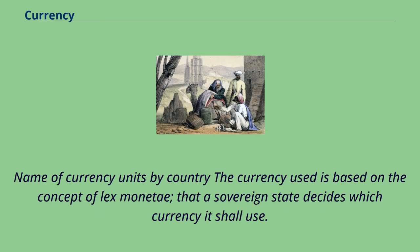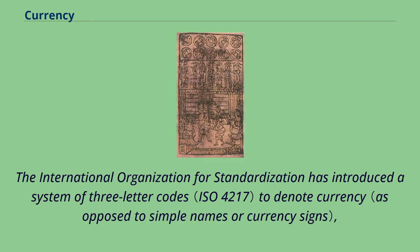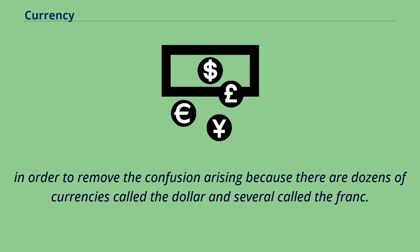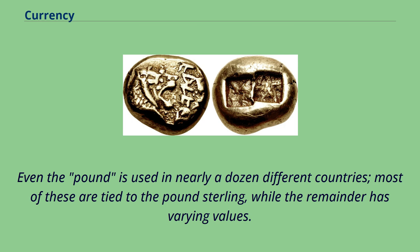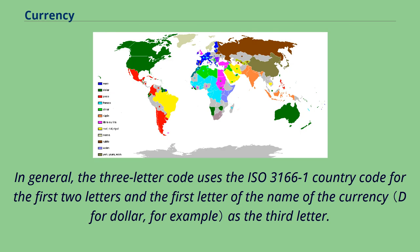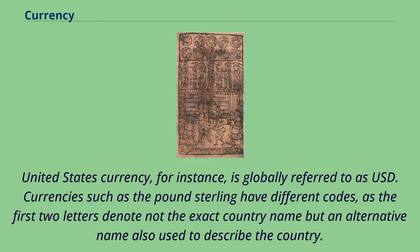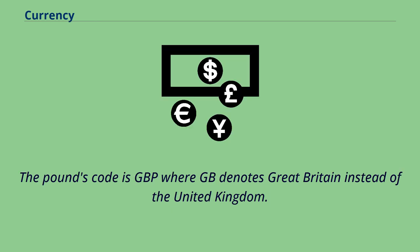The currency used is based on the concept of lex monetae, that a sovereign state decides which currency it shall use. The International Organization for Standardization has introduced a system of three-letter codes to denote currency, in order to remove the confusion arising because there are dozens of currencies called the dollar and several called the franc. Even the pound is used in nearly a dozen different countries. In general, the three-letter code uses the ISO 3166-1 country code for the first two letters and the first letter of the name of the currency as the third letter. United States currency, for instance, is globally referred to as USD. The pound's code is GBP, where GB denotes Great Britain instead of the United Kingdom.